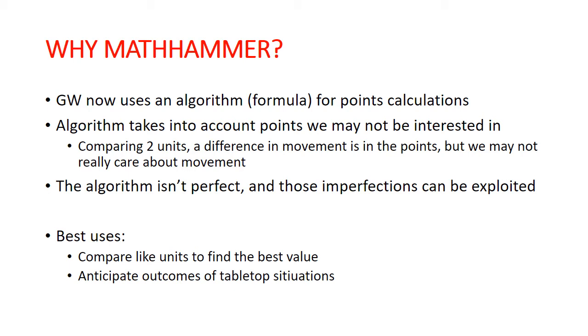So you're going to have something like maybe a dwarf with movement four versus an elf with movement six. Well, that elf, all things considered, should probably be pointed higher because it has more movement if everything else is the same. But if all you care about is their damage output from shooting,